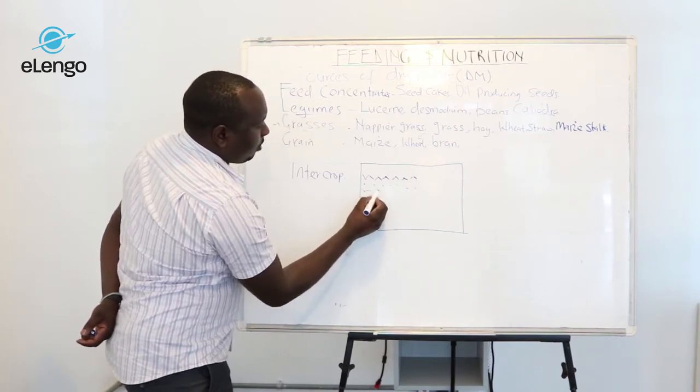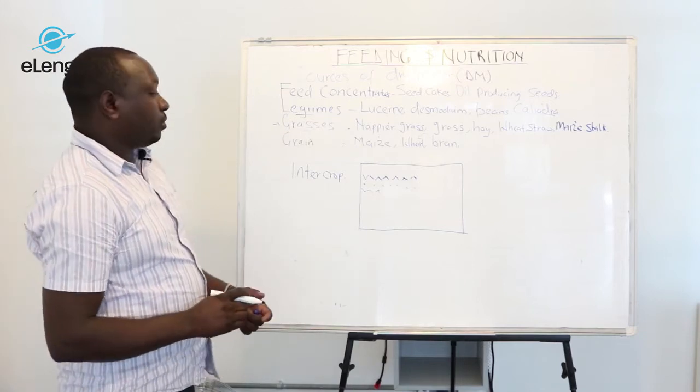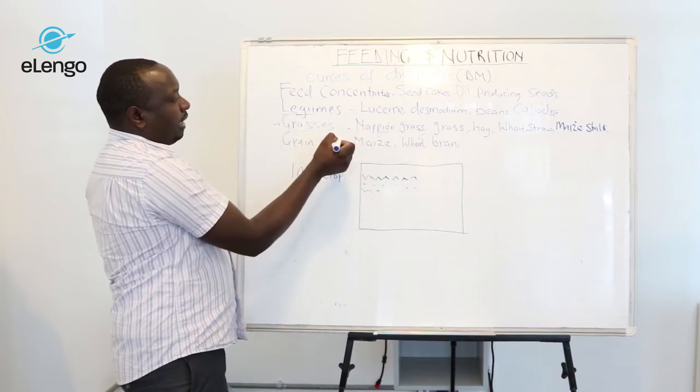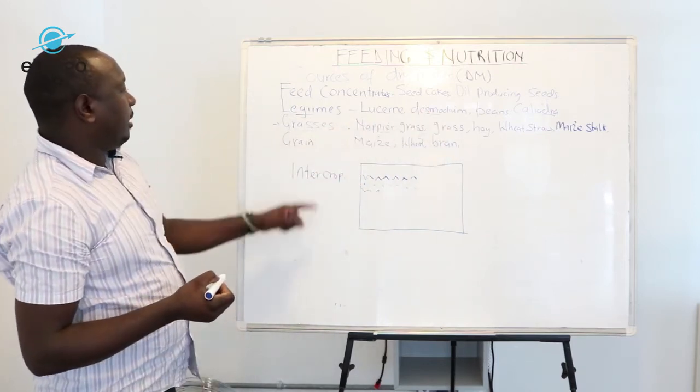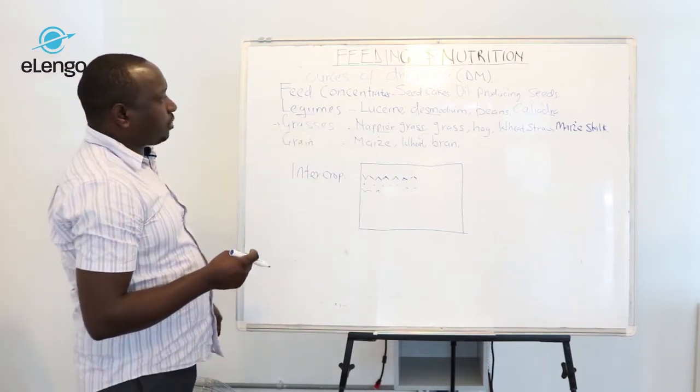When you are cutting your fodder, you clear the whole block. In that case, you realize you have fed your animal with napier as well as another protein-providing fodder.